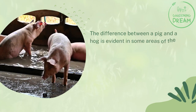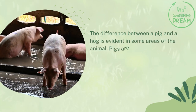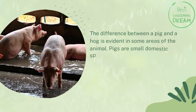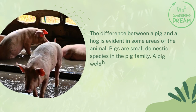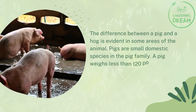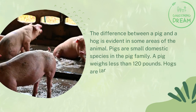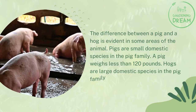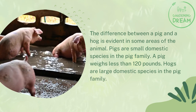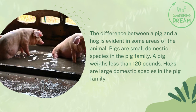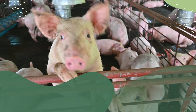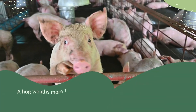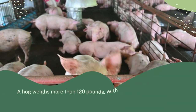The difference between a pig and a hog is evident in some areas of the animal. Pigs are small domestic species in the pig family — a pig weighs less than 120 pounds. Hogs are large domestic species in the pig family — a hog weighs more than 120 pounds.